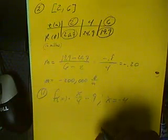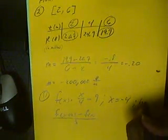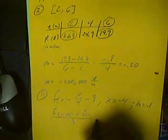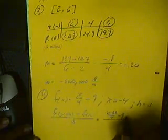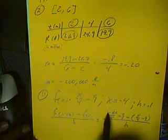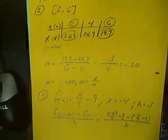One way we can do this is by using the difference quotient: f(x + h) minus f(x), all over h. This will give us an approximation, and we'll let h equal 0.1. So f(x + h) will be (x + h) over 4 minus 9, then minus the regular f(x) which is x over 4 minus 9, all over h. Remembering that x is negative 4 and h is 0.1, we can put all this into the calculator.